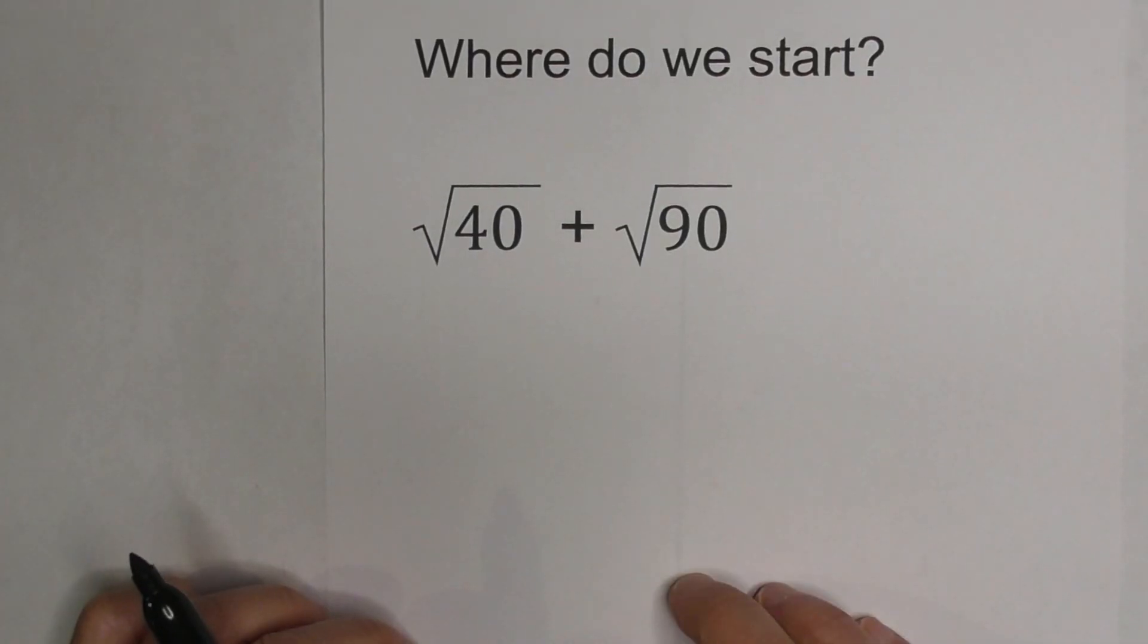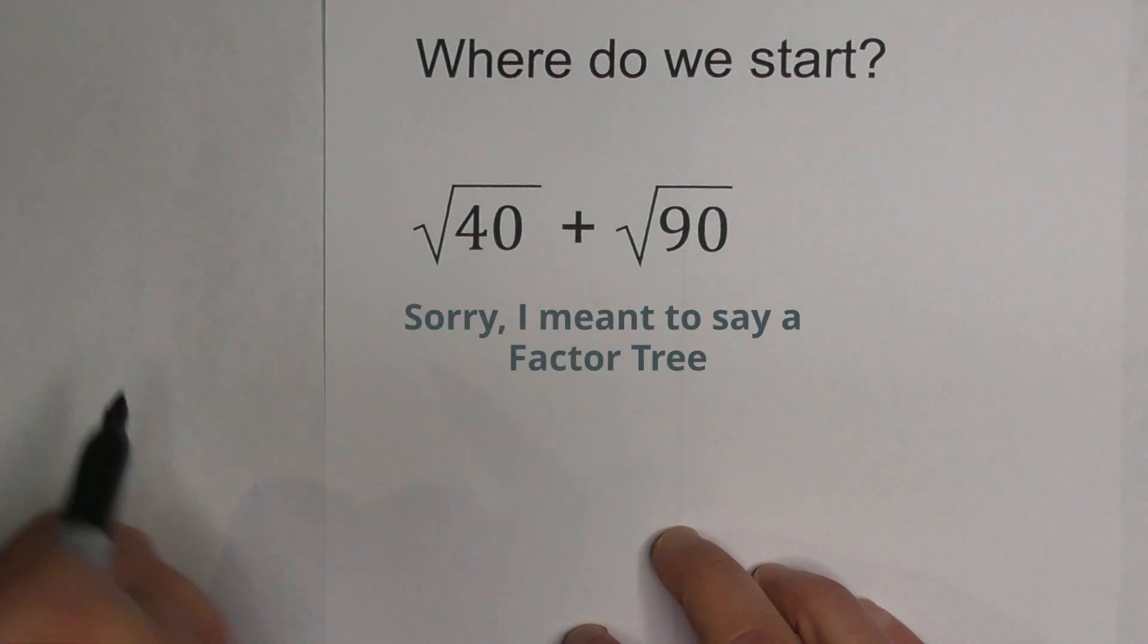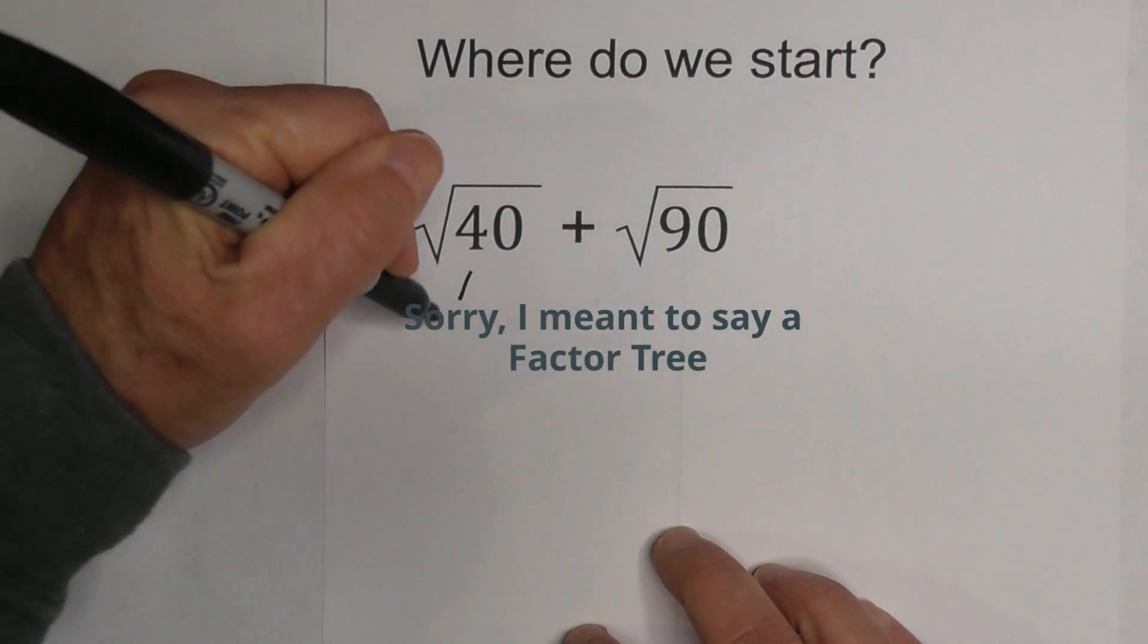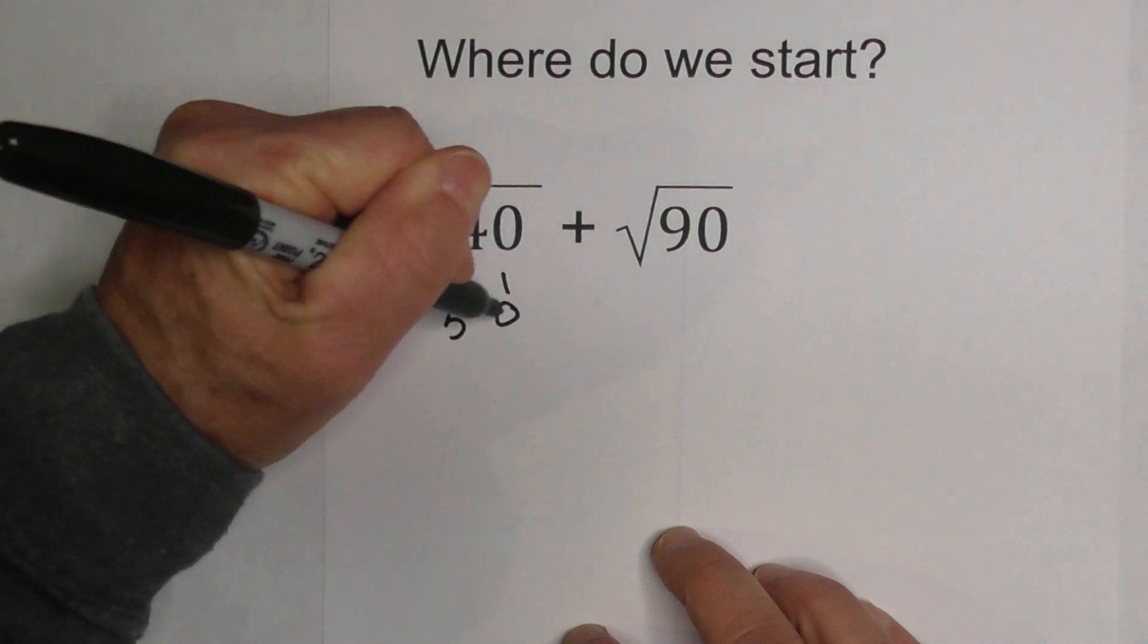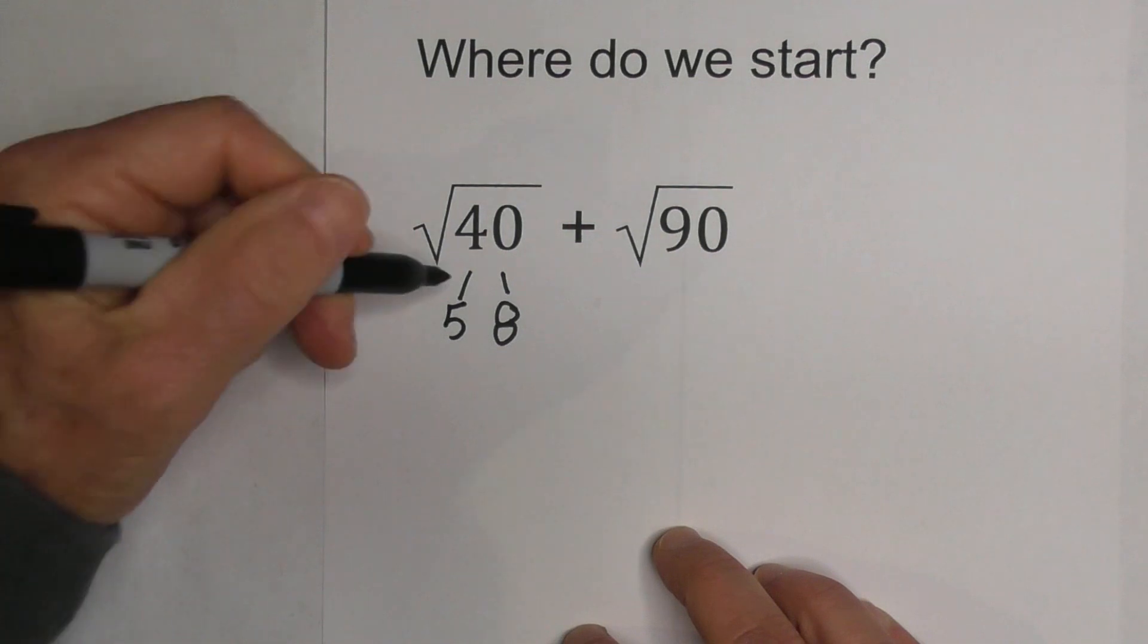So where do you start when adding square roots? Well, let's begin by simplifying. I like to use factor trees, so let's go 5 times 8. What I'm doing is multiplying two numbers together that equal 40.